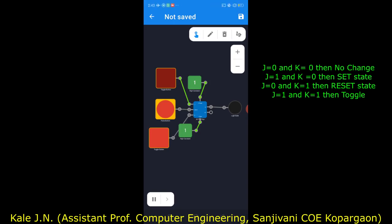To provide a clock pulse, just click on the pulse button. Here we click on the pulse button, so one clock pulse is provided to the JK flip-flop and its output is going to change as per inputs J and K.